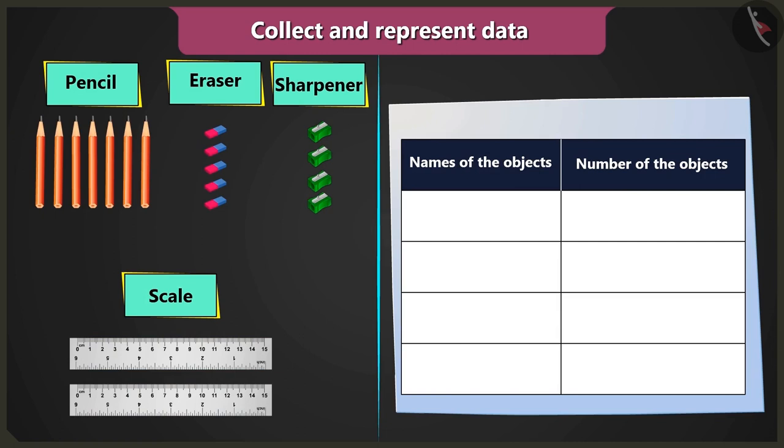I have made this table. I wrote the names of the objects in the first column and count of objects in the second column. Now write which objects are there in the column names of the objects. In the column names of the objects, I wrote pencil, eraser, sharpener, and scale.